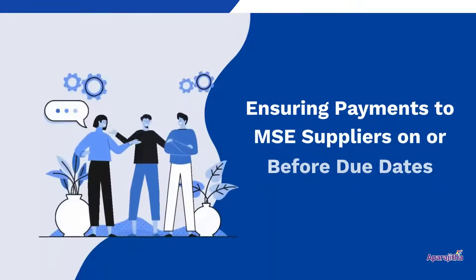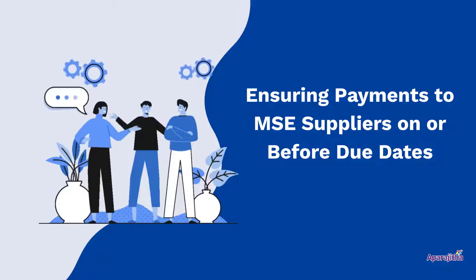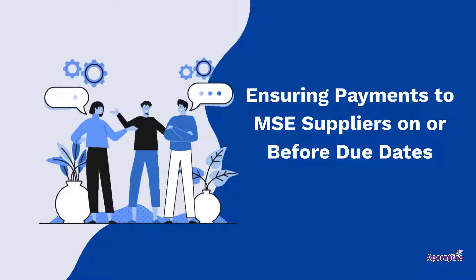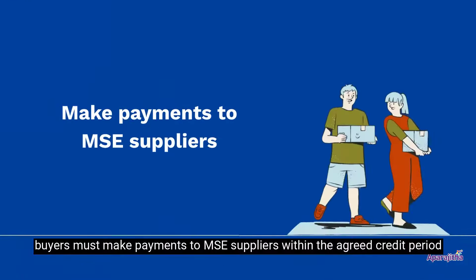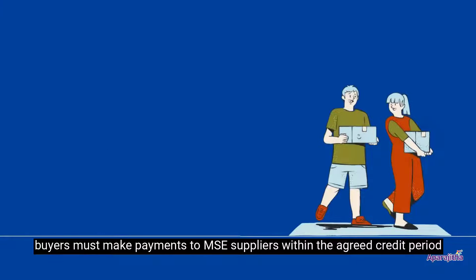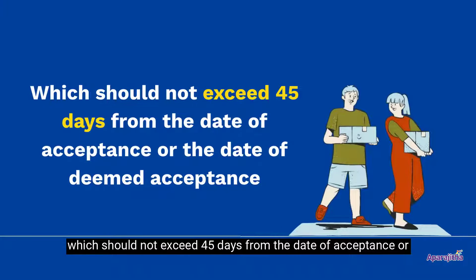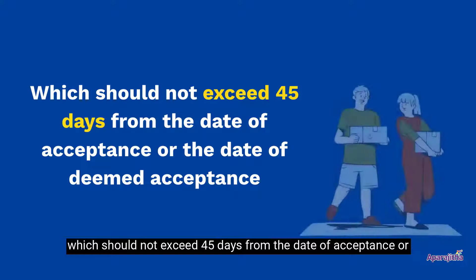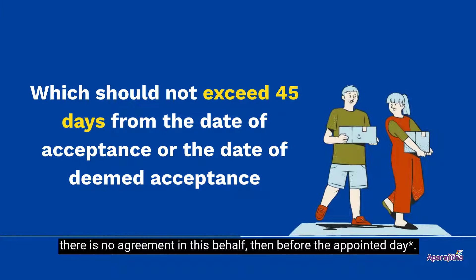Third, Ensuring Payments to MSE Suppliers on or before due dates. According to the MSMED Act, buyers must make payments to MSE suppliers within the agreed credit period, which should not exceed 45 days from the date of acceptance, or the date of deemed acceptance of the goods or services. Where there is no agreement in this behalf, payment must be made before the appointed day.